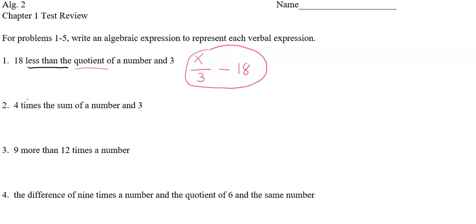The word 'times' means multiply; 'sum' means add. Putting it all together: four times the sum of a number and three. The sum of a number and three would be (x + 3). If I just leave it without parentheses, I'm showing four times a number increased by three. To show four times the entire sum, I need to put parentheses around it: 4(x + 3). Now it fits the wording.